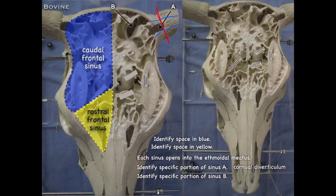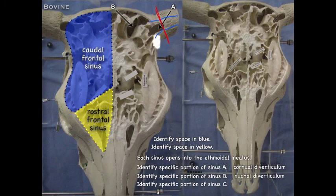The specific portion of the sinus at B is the nuchal diverticulum. The specific portion at C, because it is behind the orbit, is the post-orbital diverticulum.